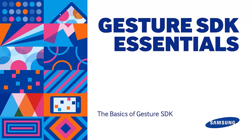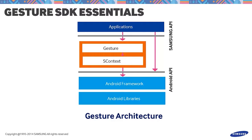Before we create our sample application, let's take a look at the architecture and classes of the Gesture SDK. The architecture consists of three layers: the applications layer, which refers to one or more applications that make use of gesture; the Samsung API layer containing Gesture and SContext — Gesture is the main component that recognizes hand gestures, while SContext provides motion with gesture events; and lastly the Android API at the very bottom.